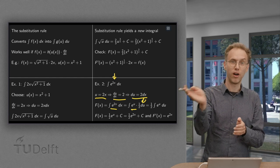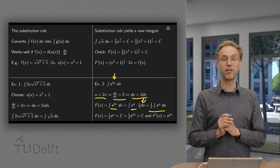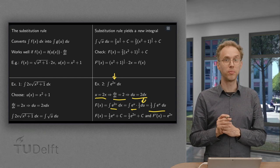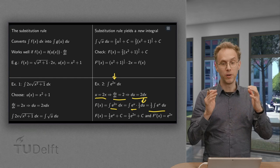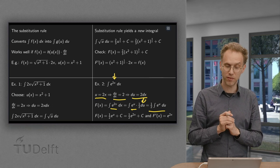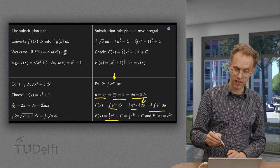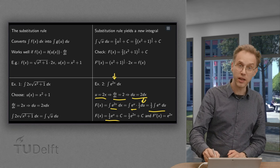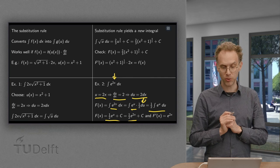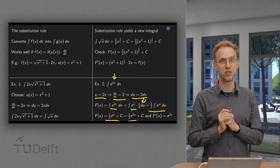We can take the 1/2 in front of the integral. And then we have a new integral, and this e to the power u is on our list. We know how to compute its antiderivative. It's just 1/2 e to the power u, plus some integration constant. And substitute back, we get 1/2 times e to the power 2x, plus integration constant.